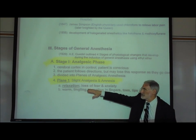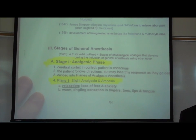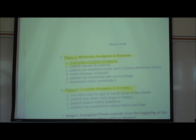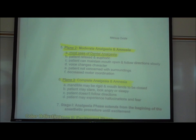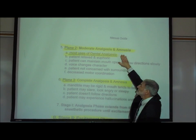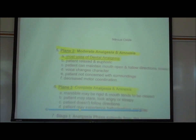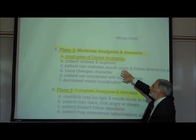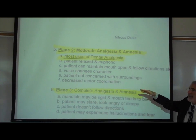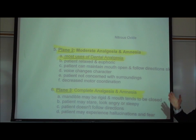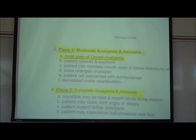Plane one is just relaxation — when you give nitrous oxide, it has a relaxing effect. Plane two is moderate analgesia, meaning moderate pain relief and some degree of amnesia, a loss of remembering what's happening. That's the plane you usually want to use nitrous oxide at — plane two of stage one.